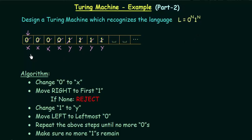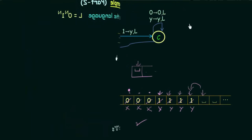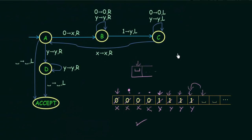The Turing machine was looking at the first 0 in the tape, replacing it with x, then going to the other end and searching for a 1. If it finds a corresponding 1 for each 0, it replaces that 1 with y, then comes back searching for the next 0, replaces it with x, goes to the other end searching for the corresponding 1 and replacing it with y, and so on. This continues until all the 0s are replaced with x and all the 1s are replaced with y.